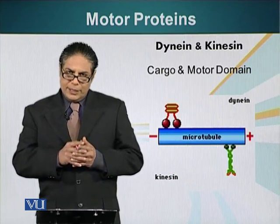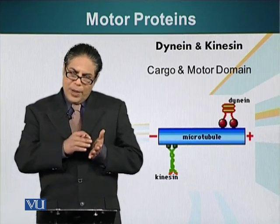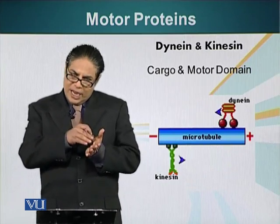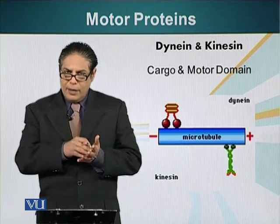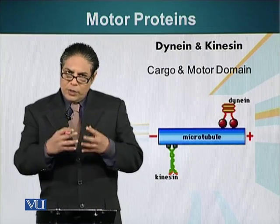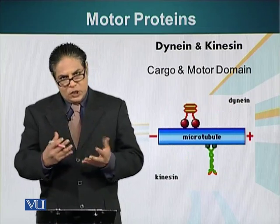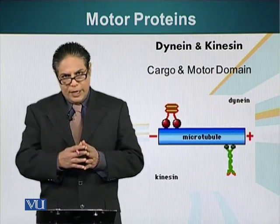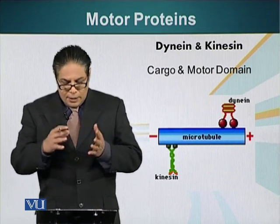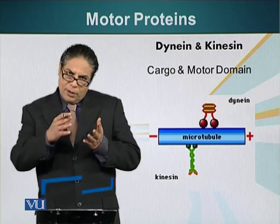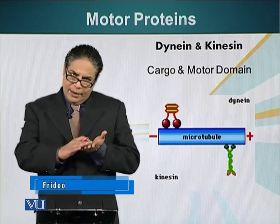Motor proteins have two domains. They have a motor domain that is attached to a microtubule, and they have a cargo domain onto which cargo — whatever material or organelle that needs to be transported — is attached. The motor domain of a motor protein can recognize the surface of the microtubule.